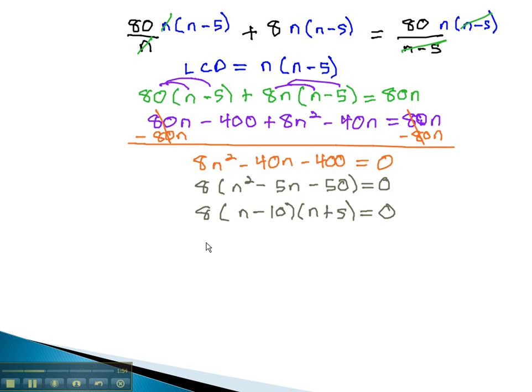To solve, we simply have to set each factor equal to 0. n minus 10 equals 0, and n plus 5 equals 0. Adding 10 to both sides gives us n equals 10, and subtracting 5 from both sides gives us n equals negative 5.